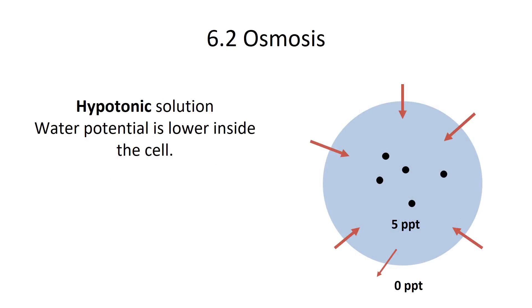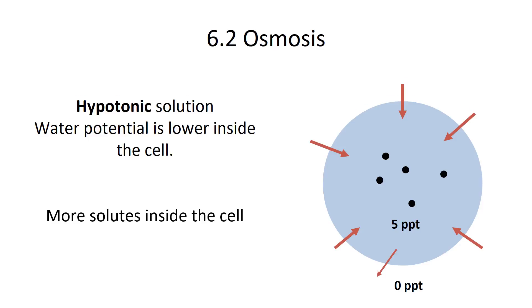The exact opposite of a hypertonic solution is a hypotonic solution. This occurs when the water potential is lower inside the cell, or there are more solutes inside the cell. In this case, water diffuses across the membrane and causes the cell to swell. If too much water enters, the cell could actually burst and die. A hypertonic solution can also kill a cell by pulling too much water out of it.